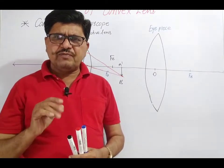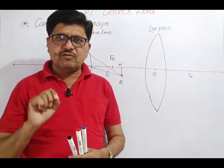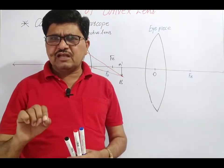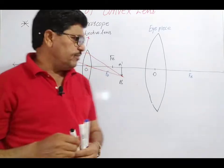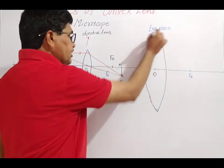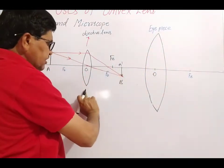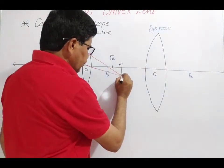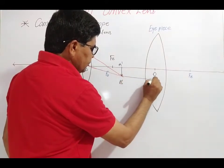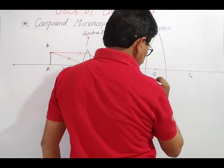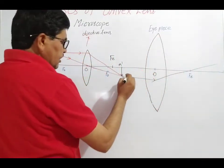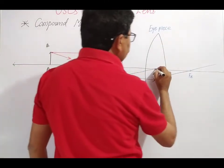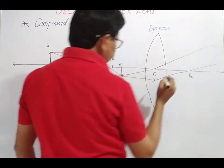If the object is placed within the focal length, between the optical center and focus, the image of that object is virtual and erected, big in size, and behind that object. With respect to the eyepiece, the image produced by the objective lens acts as the object. Again, you can consider two rays: the first ray is parallel to the principal axis — after refraction, it passes through the focus. The second ray passes through the optical center without any deviation after refraction.